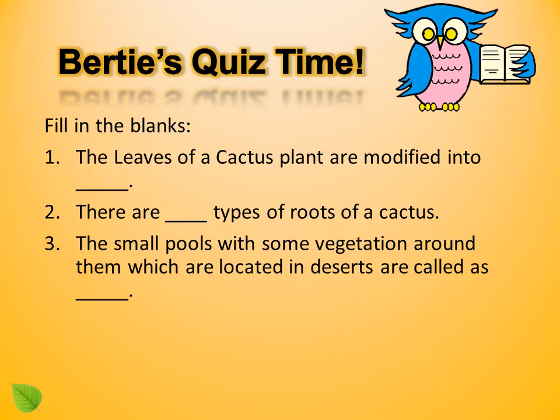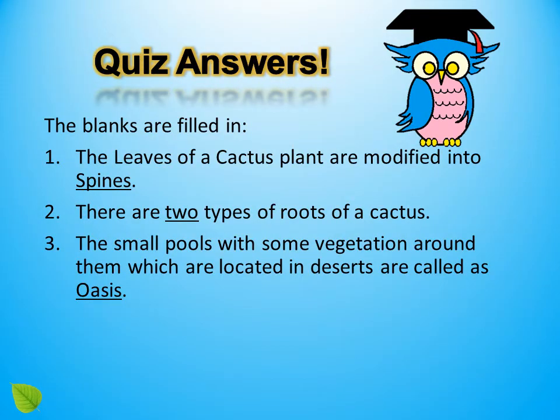It's quiz time — fill in the blanks! The leaves of a cactus plant are modified into [spines]. There are [two] types of roots of a cactus. The small pools with some vegetation around them located in deserts are called [oasis]. The leaves of a cactus plant are modified into spines. There are two types of roots of a cactus. The small pools with vegetation in deserts are called oases.